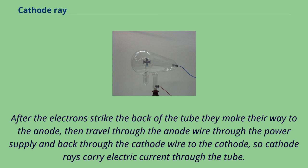After the electrons strike the back of the tube they make their way to the anode, then travel through the anode wire through the power supply and back through the cathode wire to the cathode, so cathode rays carry electric current through the tube.